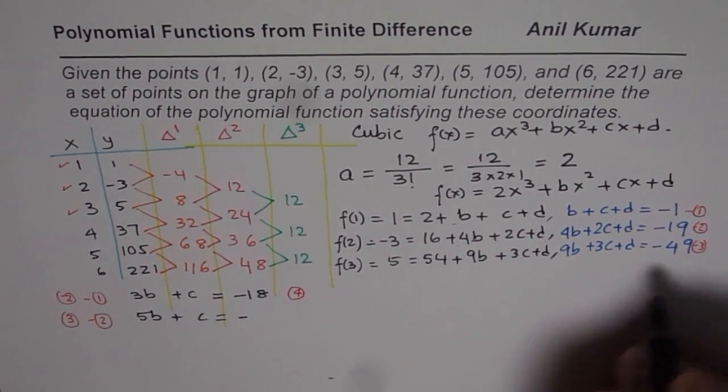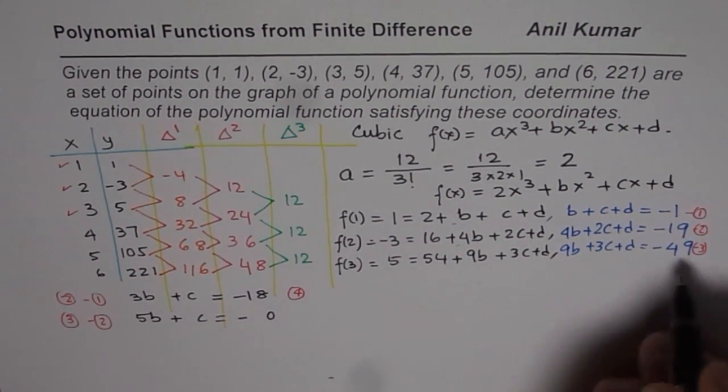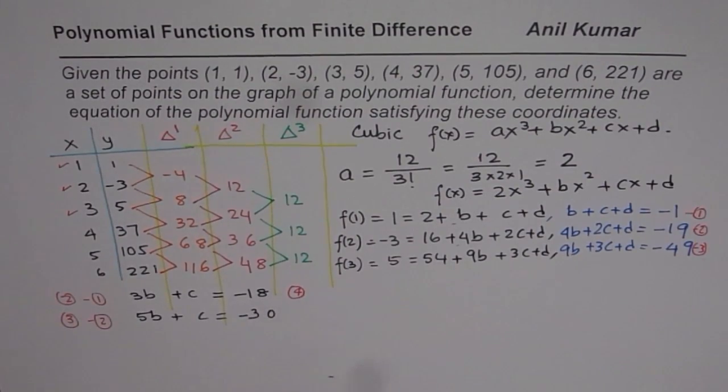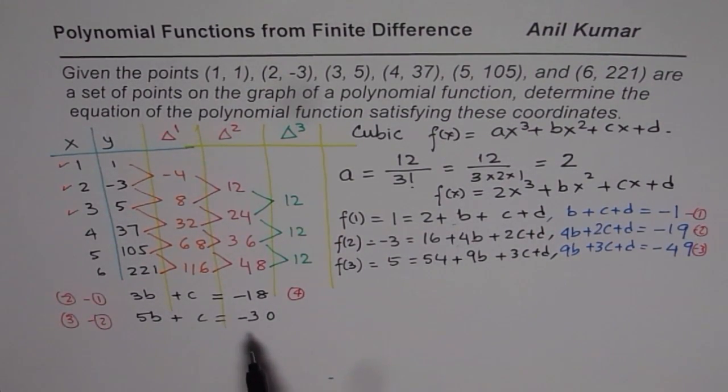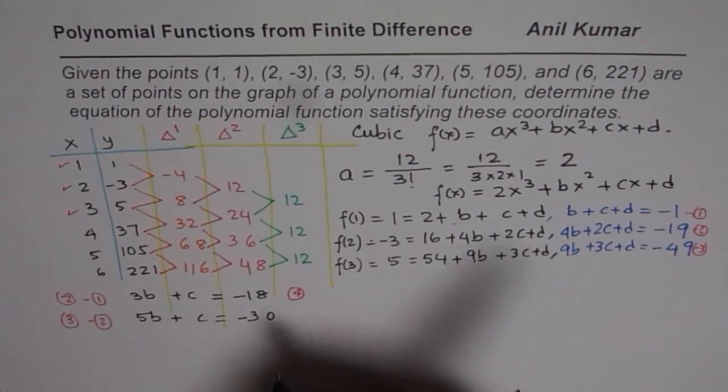So it becomes, when you take away 19 from this, you get a negative number. And 9 minus 1 is 8, so 4 minus 1 is 3, giving us -30. So that becomes equation number 5 for us.